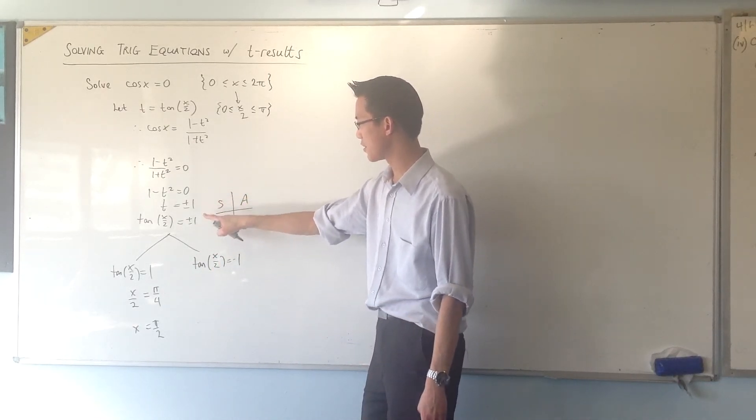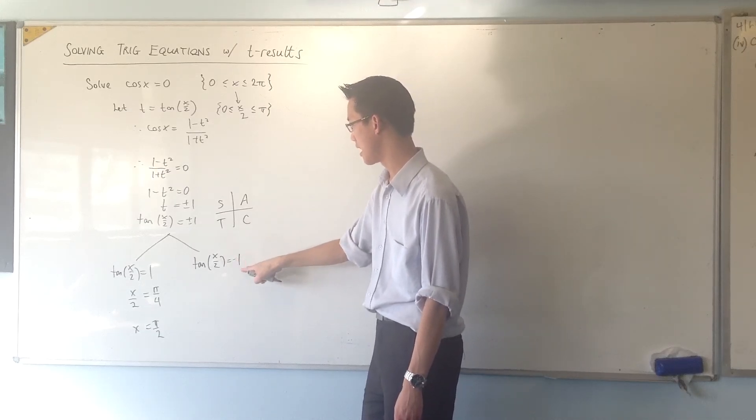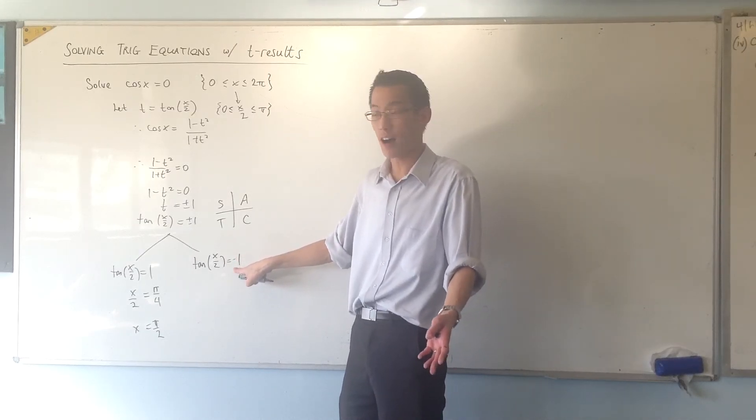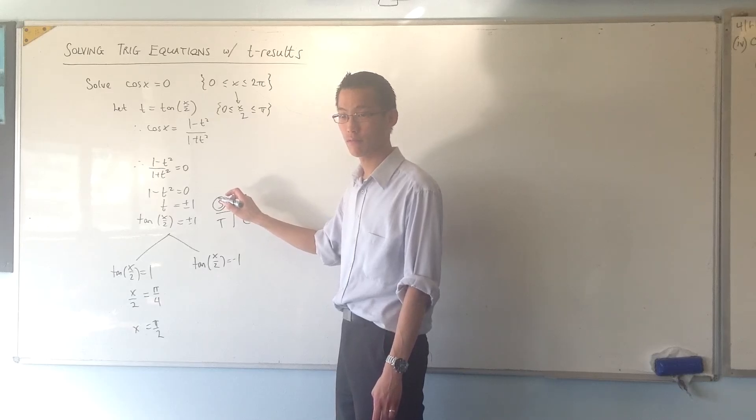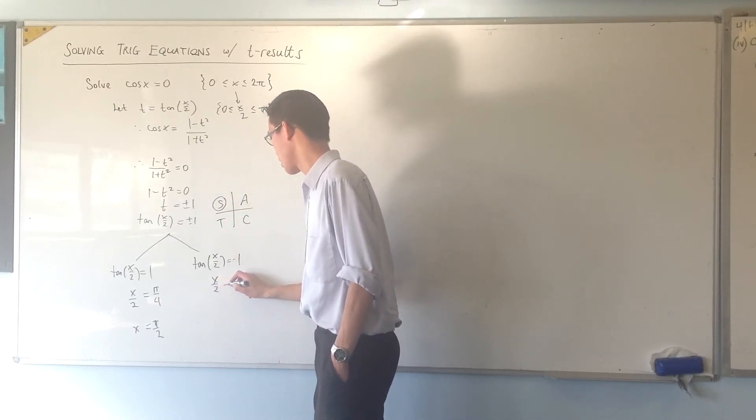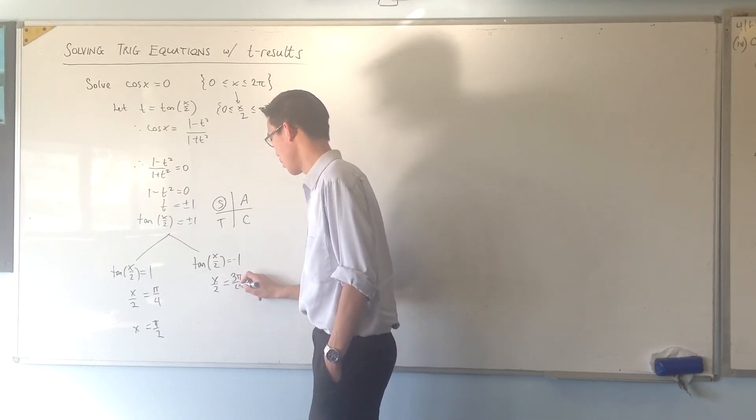When I come around to here, no, sorry. Yeah, tan is negative. Right? So, which quadrant am I after? I'm actually after this one. So, x on 2 is going to be 3 pi on 4.